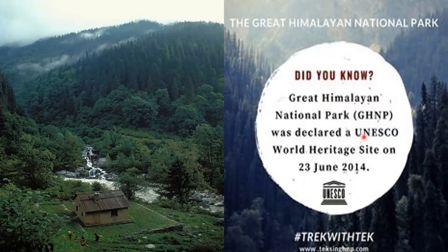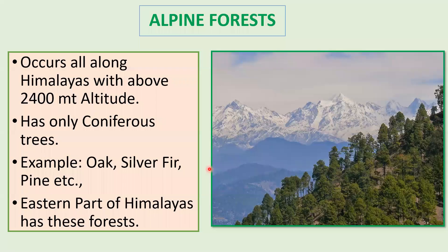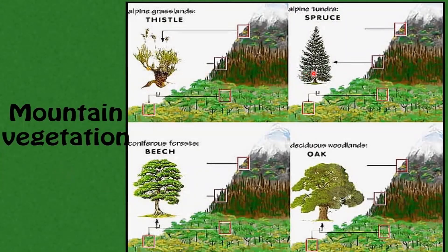Did you know the Great Himalayan National Park was declared a UNESCO World Heritage Site on 23rd June 2014? Alpine forests are found along the Himalayas at about 2400 meters altitude and above. You can find only coniferous trees here — cone-shaped trees with needle-shaped leaves — such as oak, silver fir, pine, etc. The eastern part of the Himalayas has these forests. The different types of mountain vegetation include alpine grasslands, alpine tundra with cone-shaped trees, coniferous forests, and deciduous woodlands.